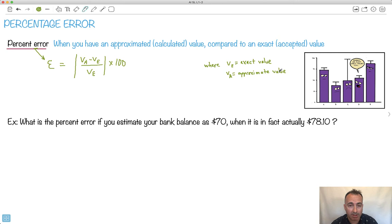So VA is your approximate value. That's the one you calculated. And VE is the exact value, the exact one. This is it.